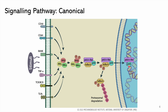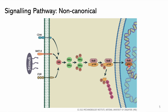In the non-canonical pathway, the dimer has one monomer in its inactive precursor form. The signal is transduced through NIK, which phosphorylates IκB kinase, which can cleave off the ankyrin repeats from the precursor, which then becomes an actively DNA-binding form.